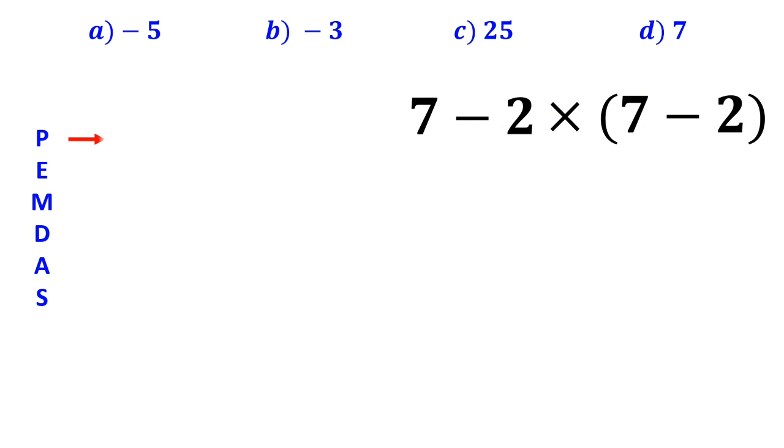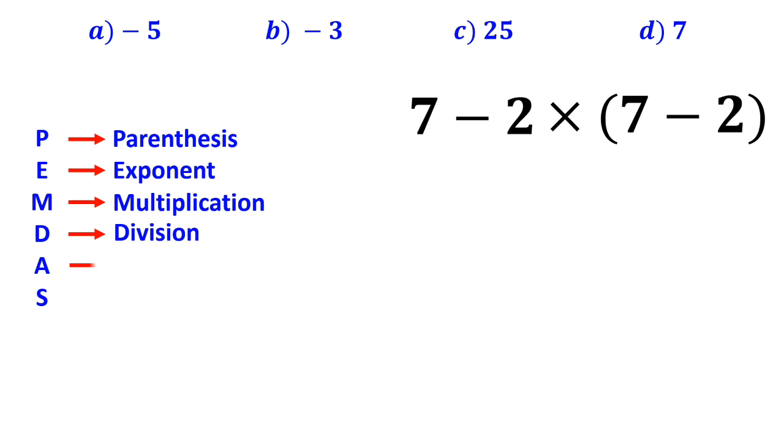In this rule, P stands for parenthesis, E stands for exponent, M stands for multiplication, D stands for division, A stands for addition, and S stands for subtraction. We have to follow the order of operations step by step from top to bottom.